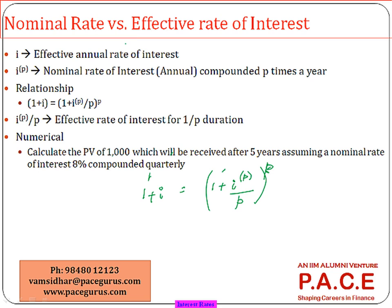Let's look at a small example with a nominal rate of interest. A thousand is going to come after five years and the interest rate is eight percent compounded quarterly.